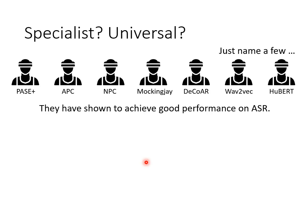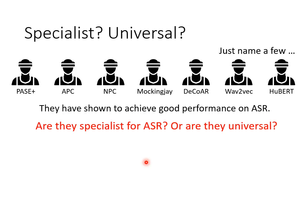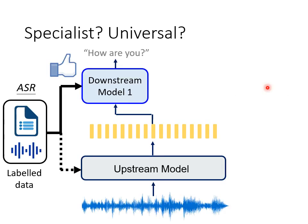When we already have a bunch of pre-trained upstream models, the literature shows they have excellent performance on voice recognition. There is a question: are these models only specialists for speech recognition, or are they universal on all voice-related tasks? These models have been proved to perform well on speech recognition, but can they also work well on different voice-related tasks? You can use any of the upstream models, which are trained on large amounts of unlabeled data, to handle any voice-related task. To be more specific, we can apply a downstream model right after the upstream model, with a small amount of labeled speech recognition data, and it can have good performance.